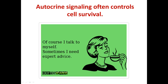Here you can see a cartoon that describes autocrine signaling. Just as people sometimes talk to themselves and need expert advice, cells also talk to themselves, and this is very important for cell survival. Cells frequently send themselves signals to promote survival. This can go awry in diseases like cancer, where a cancer cell sends signals to itself not only to survive but to grow and divide, which can lead to tumor formation.